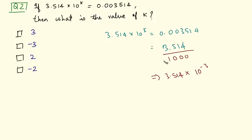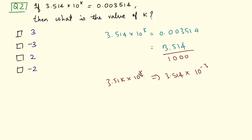If you take this 1000 above the division sign it becomes 10 raised to power minus 3, and then we have 3.514 into 10 raised to power k. The rest of the terms are same and we can directly infer from this expression that the value of k is minus 3. So the answer is minus 3.